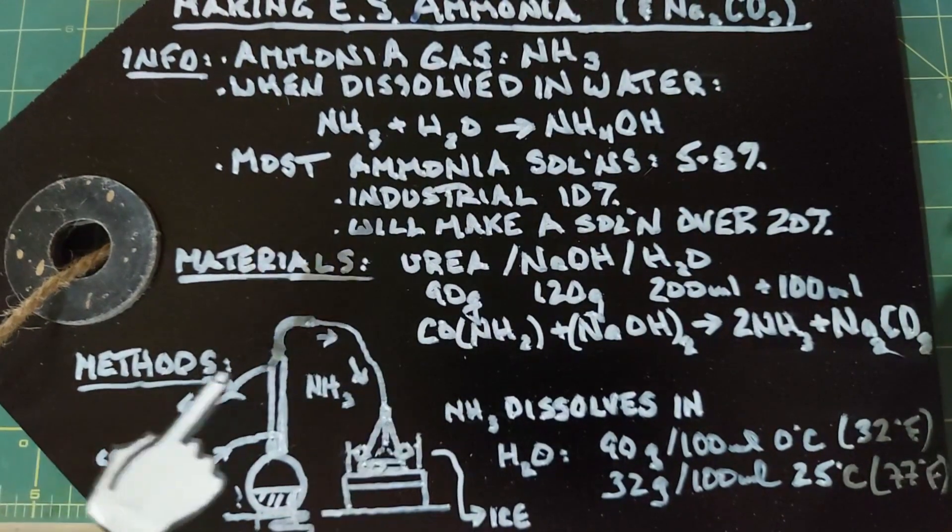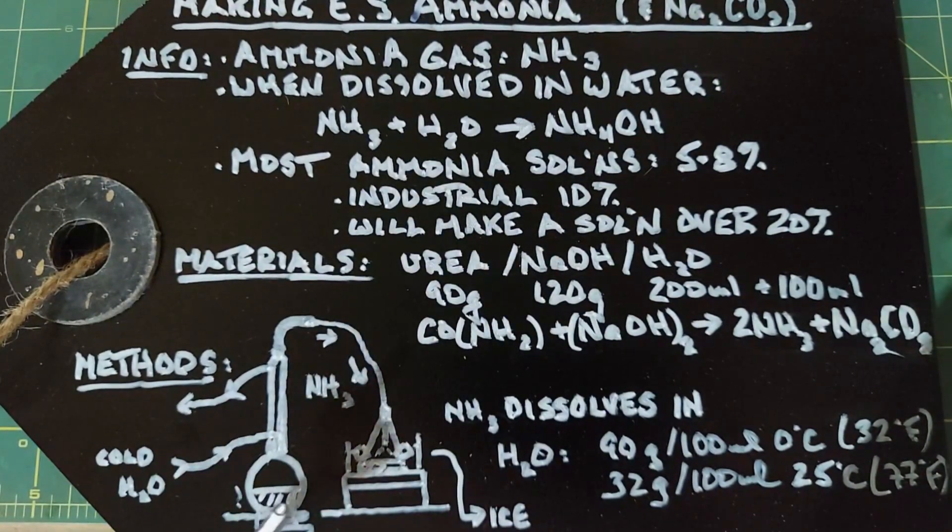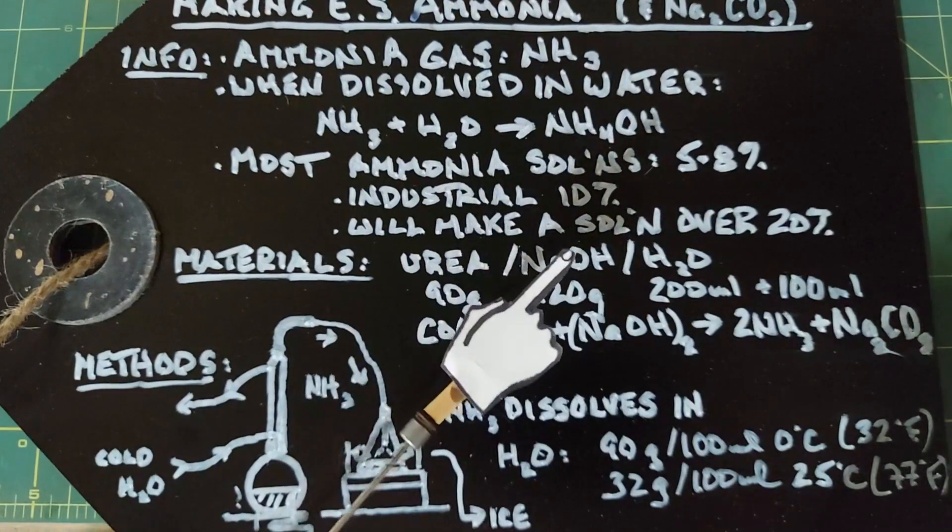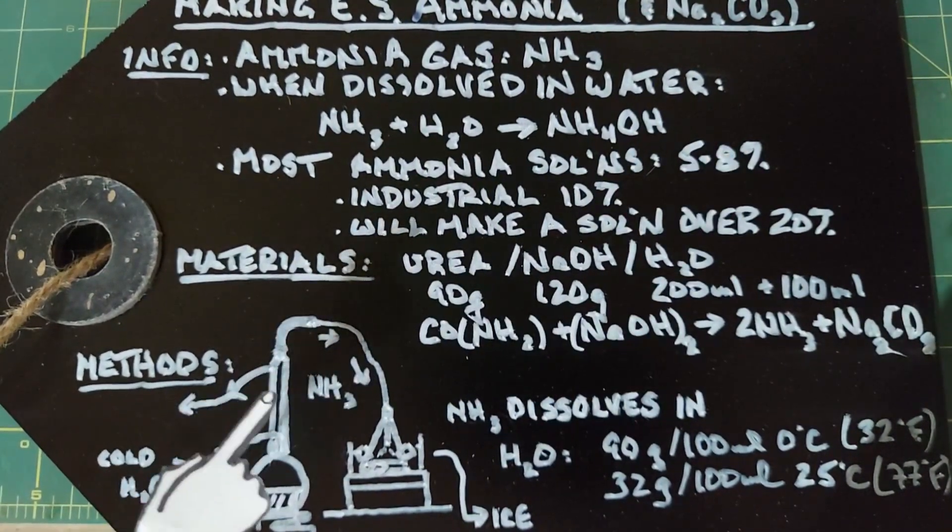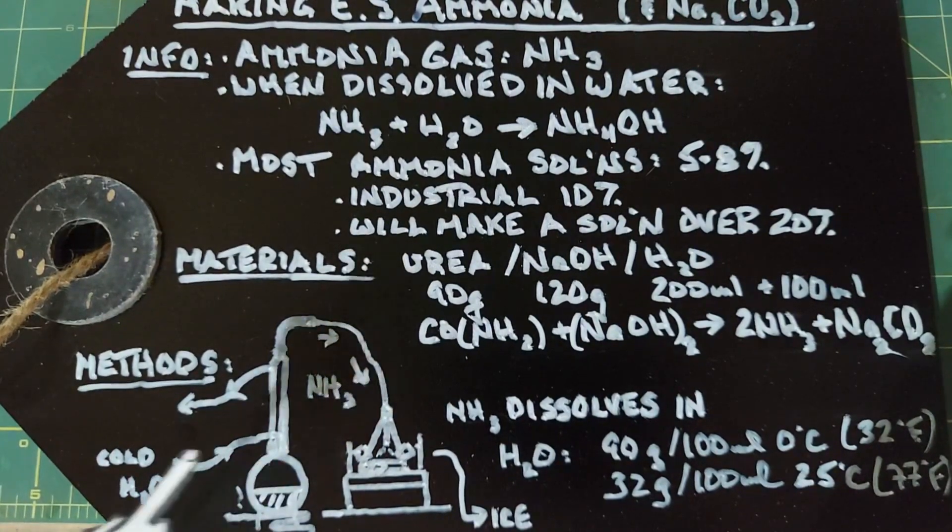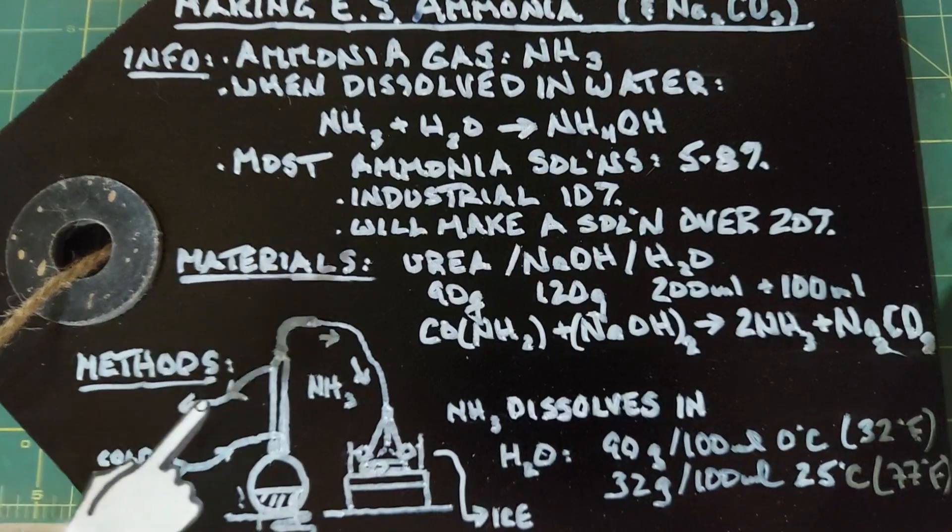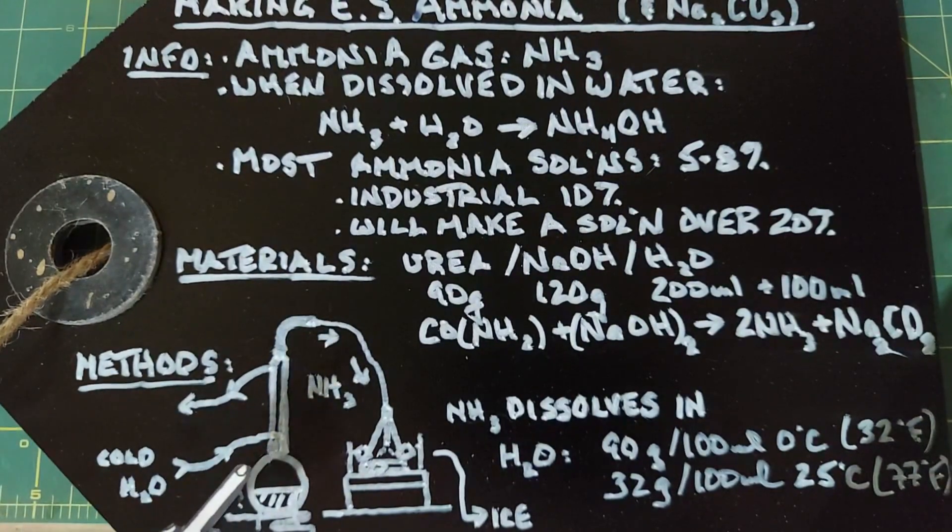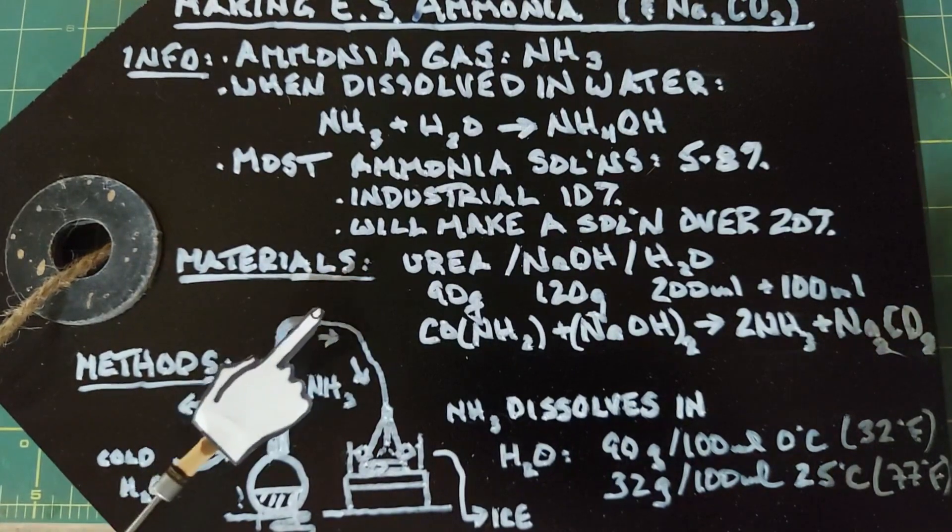For our method, we're going to have a round bottom flask that's going to be heated. In that flask goes the urea, the sodium hydroxide, and the water. We'll have a distillation tube, except instead of being horizontal it's going to be vertical. Cold water is going to go in the bottom, come up, and then come out the top. The reason for this is that water will also evaporate with the ammonia, and the water is more susceptible to this cold and will drip back in, purifying the ammonia gas which will continue up through the top.